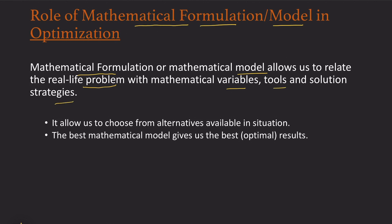The mathematical model allows us to relate various real life problems with mathematical variables, tools, and solution strategies. One of the very important starting points in optimization is understanding how we select the alternatives available in a real life situation. The best mathematical model will allow us to reach the nearest optimal solution. Let me consider an example to illustrate what I mean by alternatives.